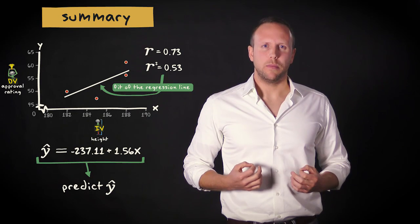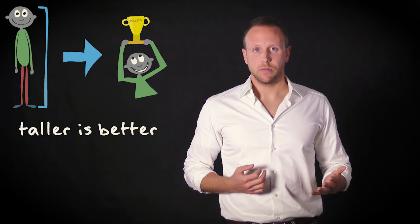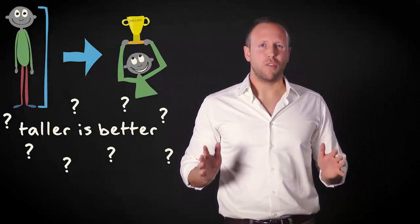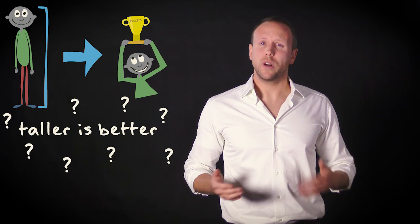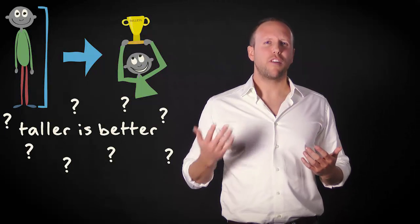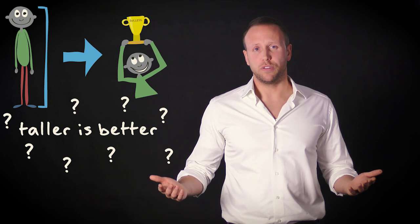But what have we learned substantively? Well, that tall leaders are more successful than short leaders. However, this conclusion is based on a sample of only four American presidents who don't differ much from each other when it comes to their physical height. It is up to you to decide if this warrants far-reaching inferences about the relationship between height and approval ratings.